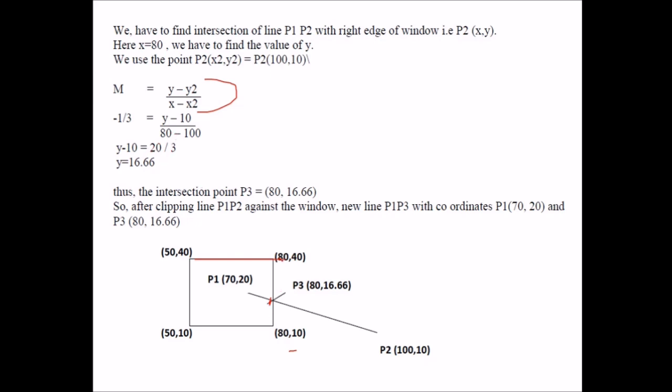We can easily find the value of Y. Just use again this M. Y minus 10. Just take this value and this is equal to the slope, because slope we have already computed, minus 1 by 3 will be slope. Take these two points, 80 and 100 and this Y minus 10. Because Y we have to find, X we already know it is 80. So Y will be 16.66. This is the intersection point P3 which is 80, 16.66.